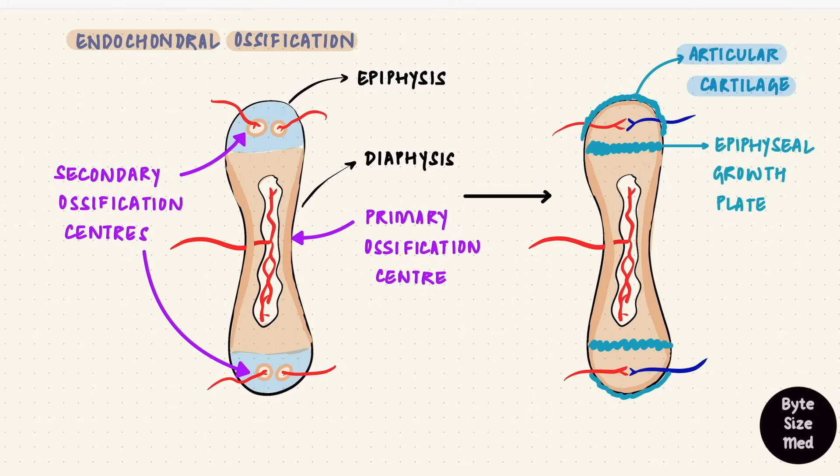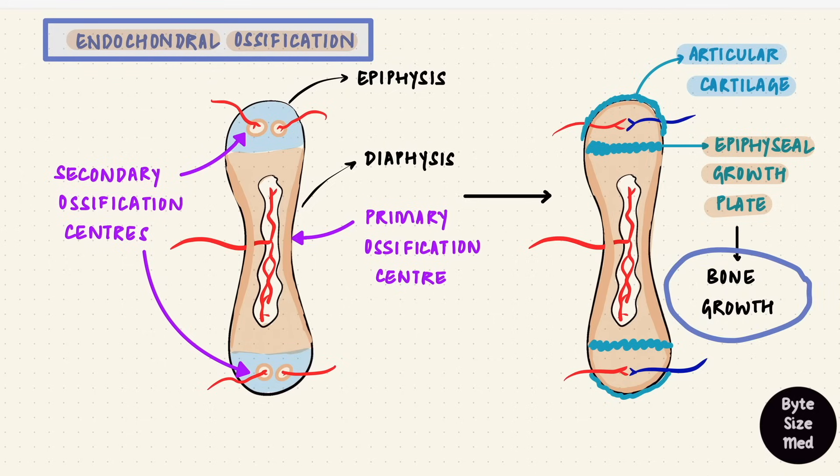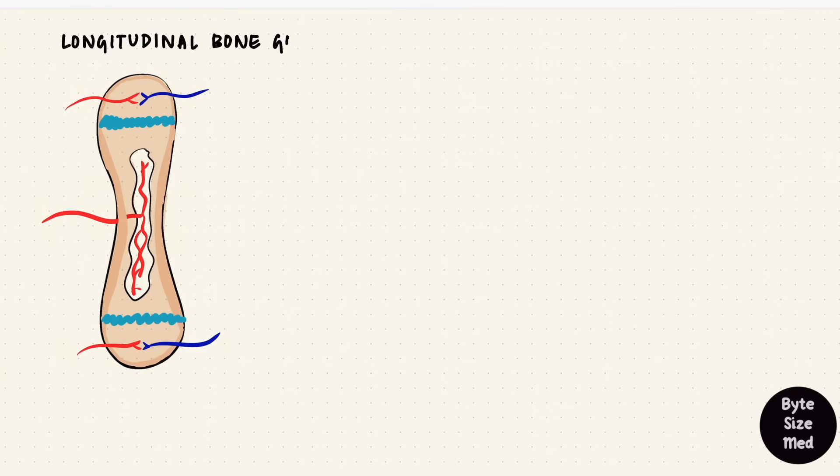The articular cartilage stays for life, but the growth plate, that is responsible for the longitudinal growth of bones. But now we've formed bone by endochondral ossification. And longitudinal growth of bone also happens by endochondral ossification. Bone is going to replace cartilage from the diaphysial end of that growth plate.